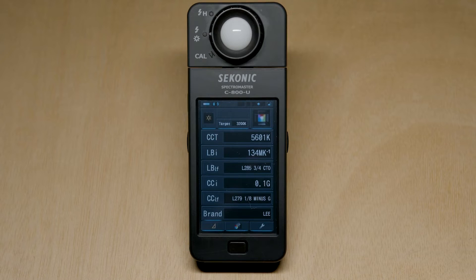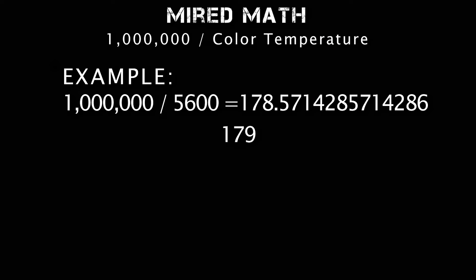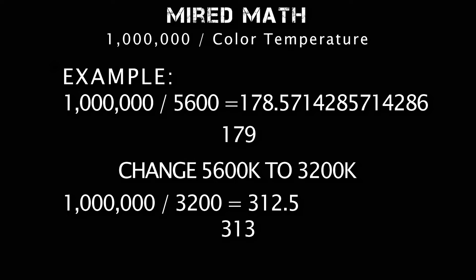In order to understand what we're reading, we need to plug in a target color temperature — you can do so by tapping here and typing in the number. Then if we take a reading of a light, we'll have a number displayed. To get a Myriad value of a color temperature, you take 1 million and divide it by the color temperature. For instance: 1 million divided by 5600 equals 178.5714..., basically 179 — that's 5600's Myriad value. Now let's say we want to figure out the Myriad shift value to get that light to 3200 degrees Kelvin.